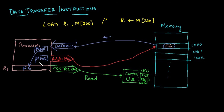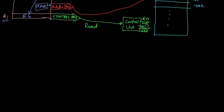We also have another register called the MAR — the memory address register. The processor loads the address 1000 into the MAR, which is then sent on the address bus to memory. A read control signal is sent, the memory loads the data at that address onto the data bus, and when the processor receives it, the data is first loaded into the MBR and then sent to the desired register r1. This is what happens during a load instruction.